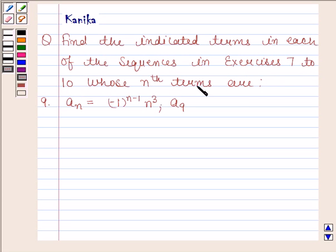In exercises 7 to 10, the nth term is a_n = (-1)^(n-1) * n^3, and we have to find a_9. Let us now begin with the solution.